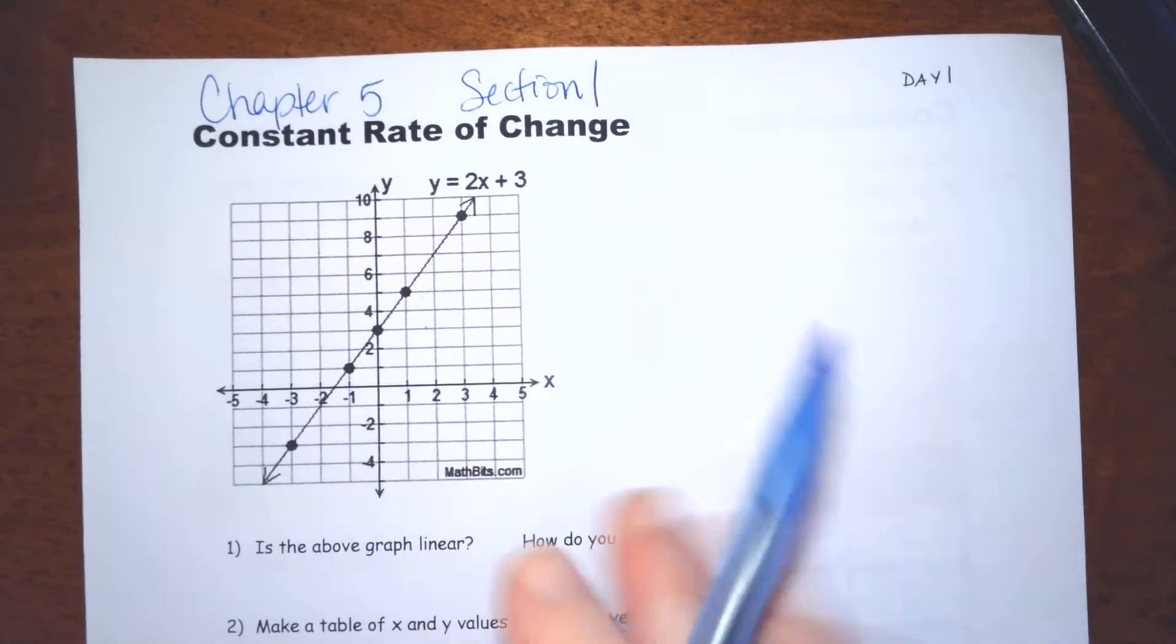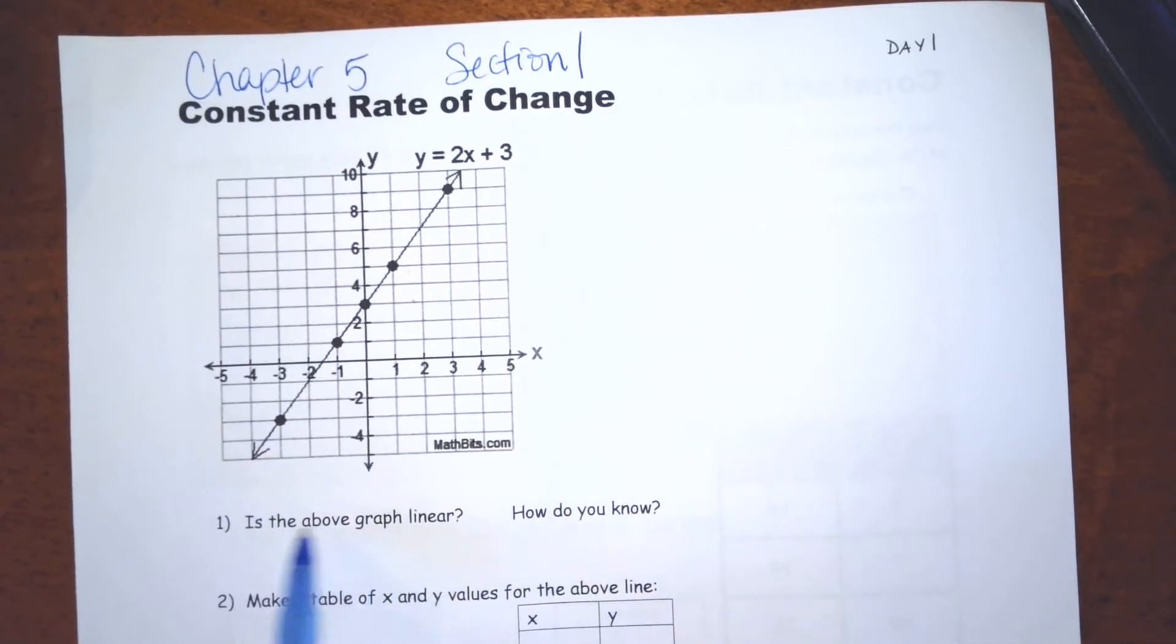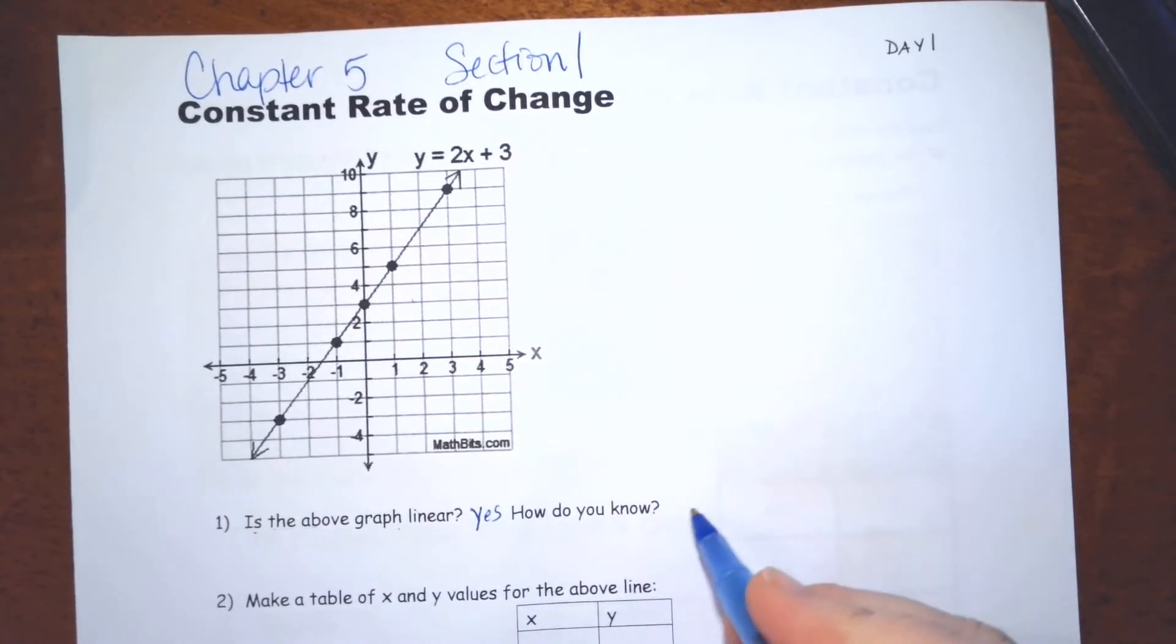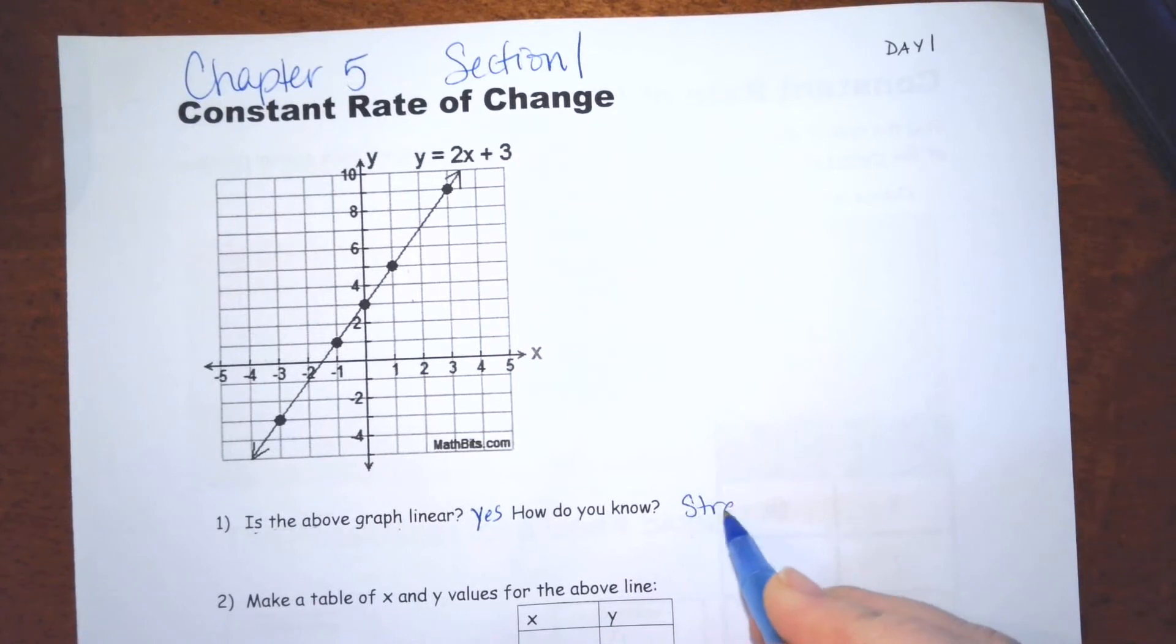And it appears to be in a straight line, so the first question is, is this graph linear? Yes, we would say it's linear. How do you know? It's in a straight line.